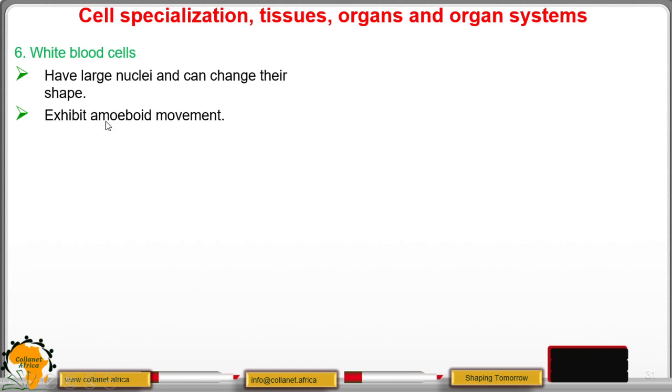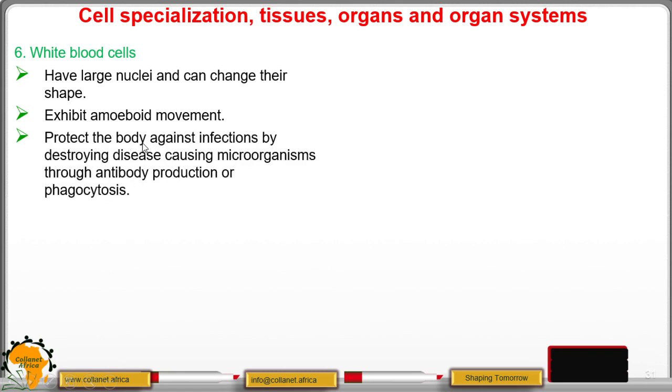They exhibit amoeboid movement and protect the body against infections by destroying disease-causing microorganisms through antibody production or the process of phagocytosis. We shall learn about antibodies in form 2, but in summary, the body has an immune system and antibodies are produced in correspondence to the antigens or the pathogens or microorganisms that want to cause infections in our bodies.